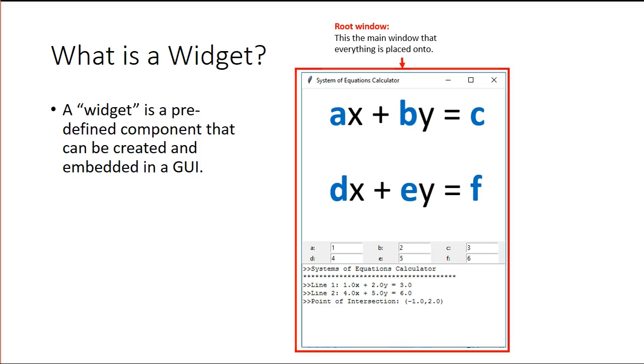The first thing we have is what's called a root window. Whenever you're working with the Tkinter package you have to make a root window. This is where everything gets placed. This isn't really a widget but it's where the widgets go.